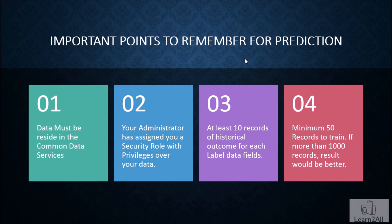At last, minimum 50 records are required to train. If more than 1000 records, then the result would be better. So these are the four consideration points that we need to consider before we build our CDS model.